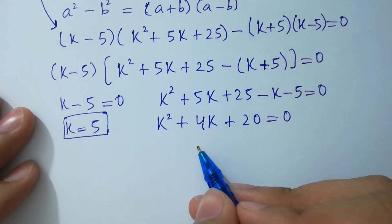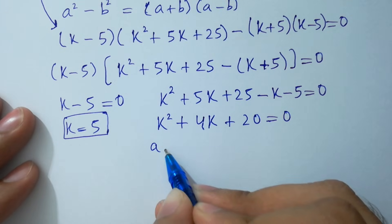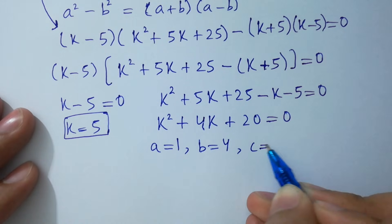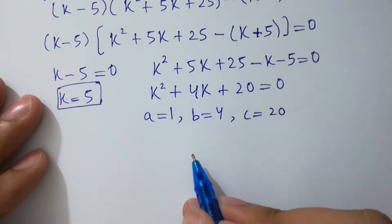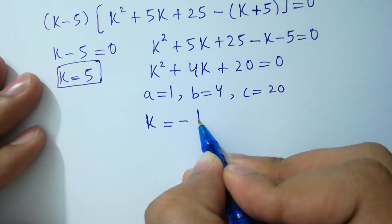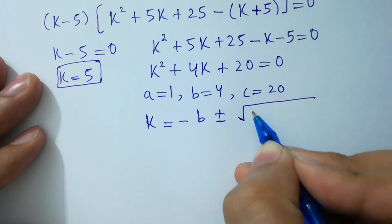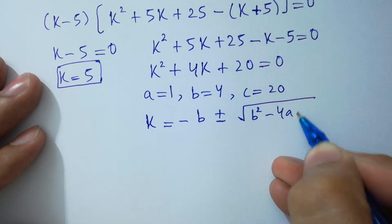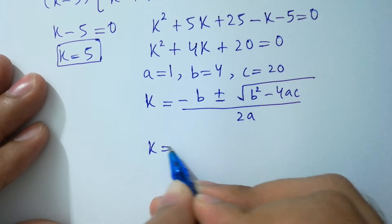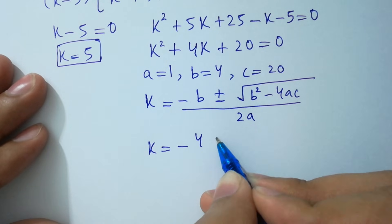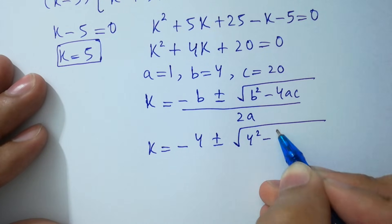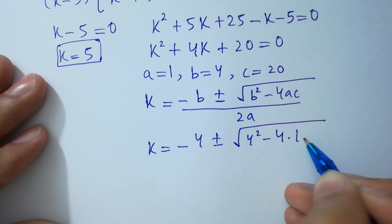This is a quadratic equation with a equals 1, b equals 4, c equals 20. Applying the quadratic formula: k equals minus b plus or minus square root of b squared minus 4ac, over 2a. So k equals minus 4 plus or minus square root of 16 minus 4 times 1 times 20, over 2.